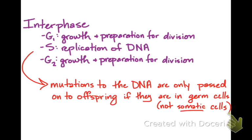mitosis is the division of somatic cells, which are all your other body cells. And mutations to those cells are only going to exist in the organism, but any mistakes that happen during S phase